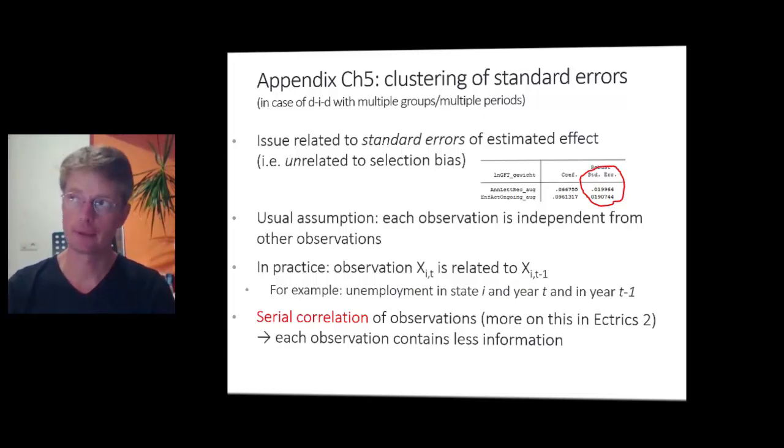with time series data from multiple groups, then it may well be that observation xt for subject i is related to observation xt-1 for the same subject. For instance, say that you're working with data for a couple of states and you're looking at unemployment. Then within a certain state,